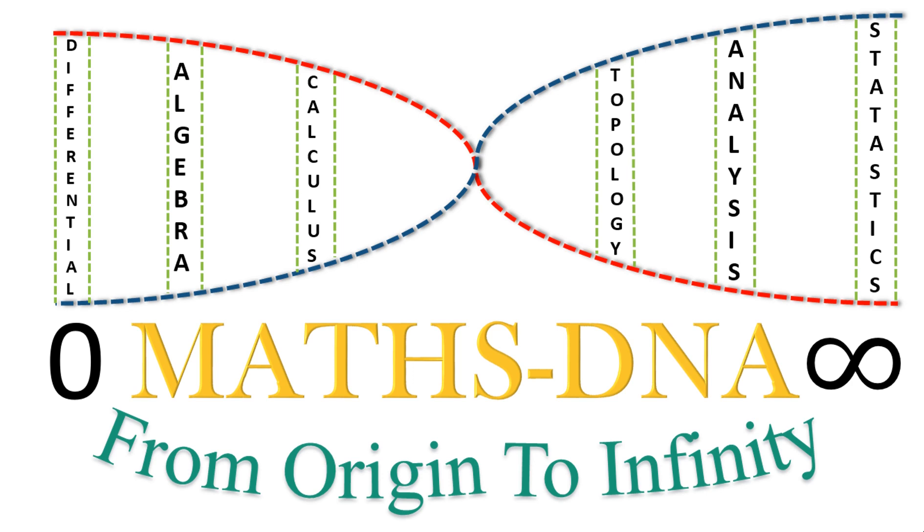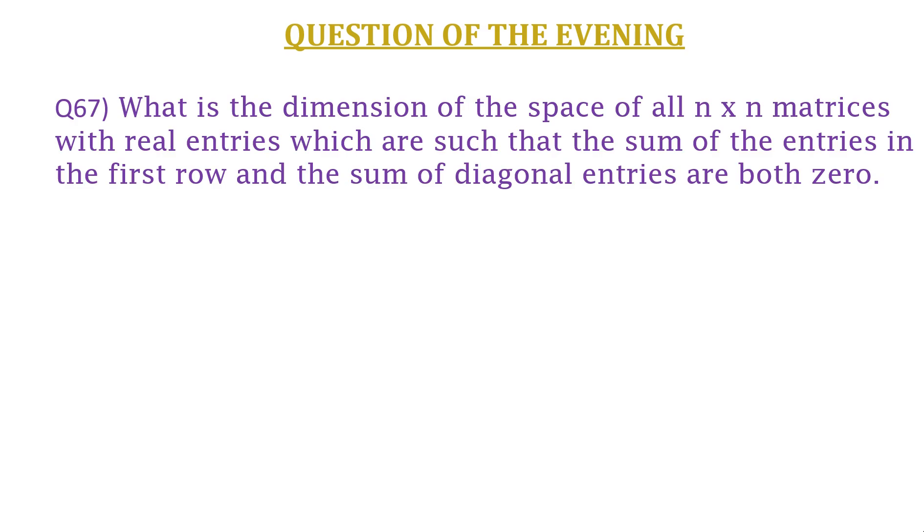In this video we are going to discuss a question of linear algebra. The question is: what is the dimension of the space of all n×n matrices with real entries which are such that the sum of entries in the first row and the sum of diagonal entries are both zero?